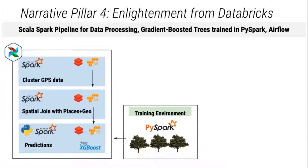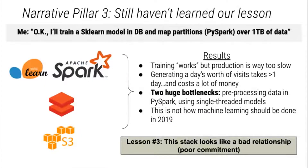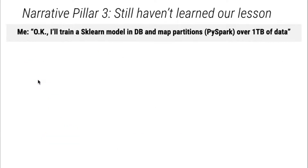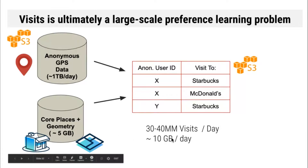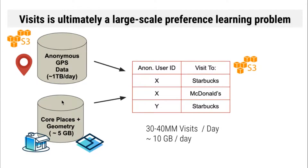There were a couple of questions that came up. One was: how big is the data set you were trying to train on? The GPS data is about a terabyte of data per day. Our Core Places and geometry data isn't huge, although it's not trivial either — geometry files can be pretty rich. And ultimately, we're getting around 30 to 40 million visits per day — 40 million different clusters being matched to 5 million different places. The end result is about 10 gigabytes. Another question was: why not just do everything in Scala? The answer is that I personally like doing machine learning in Python more than Scala and was very resistant to moving everything over. But ultimately, Scala had a ton of advantages.